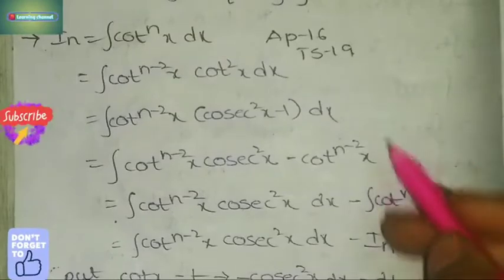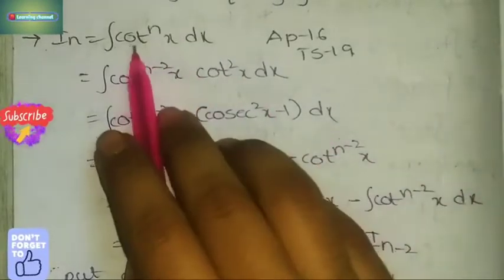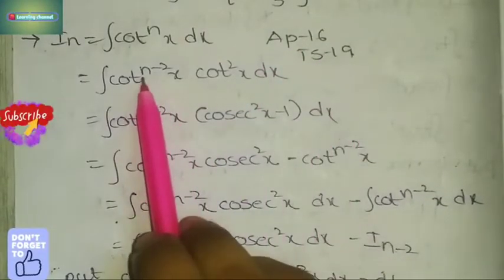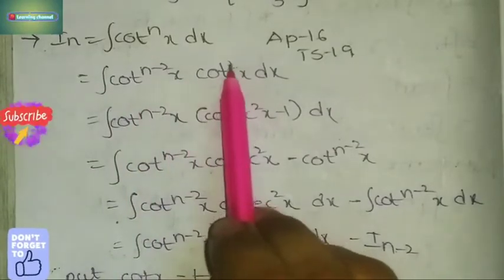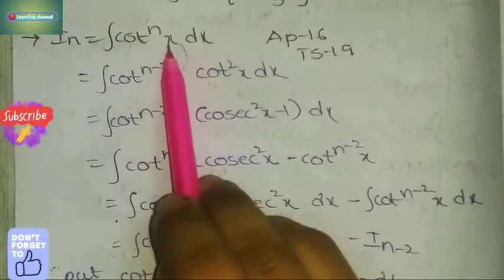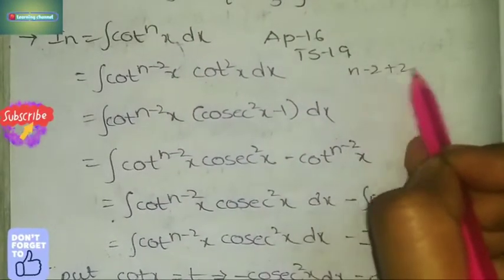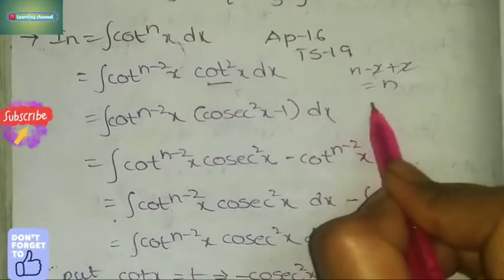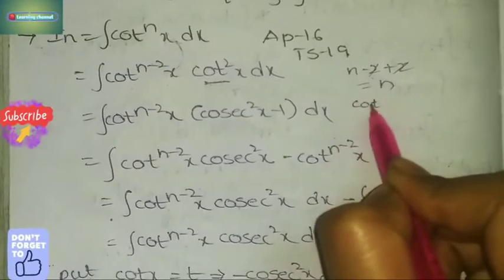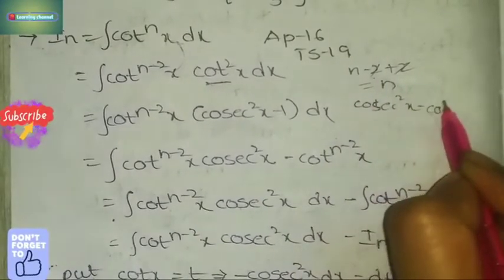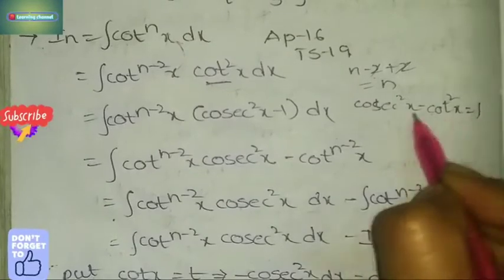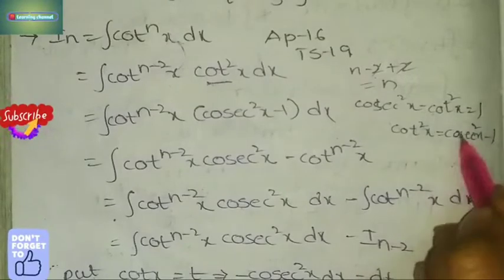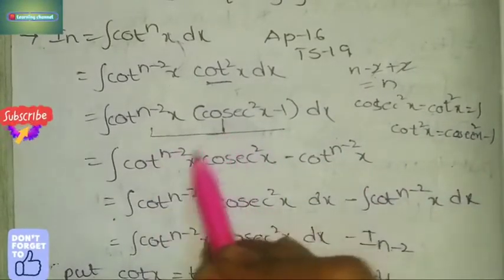Now cot — the cot formula is the same as tan. Integral cot^n x dx, which is repeated in AP 16 and TS 19 exams. Same as tan: write cot^n x as cot^(n-2) · cot² x, and powers n-2 plus 2 = n. Use the identity cosec² x - cot² x = 1, so cot² x = cosec² x - 1. Apply this formula, giving cot^(n-2) · cosec² x - cot^(n-2) x.